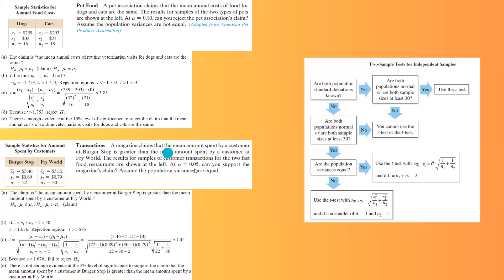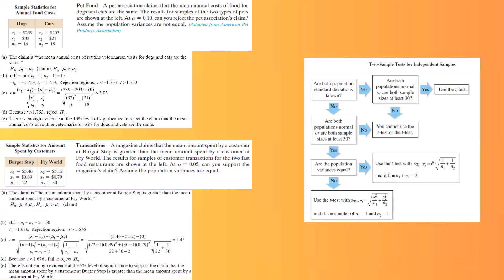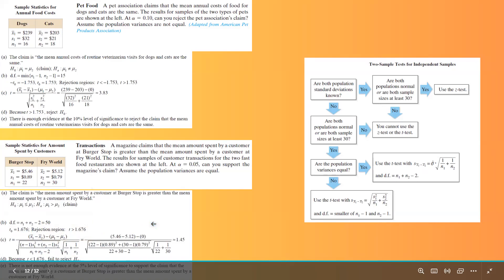At a 5% level of significance with 50 degrees of freedom, the critical value is 1.676. For the right-tail test, reject when t is greater than 1.676. The test statistic formula is x1-bar minus x2-bar minus (mu1 minus mu2), divided by the square root of [(n1 minus 1)s1 squared plus (n2 minus 1)s2 squared] divided by (n1 plus n2 minus 2), multiplied by the square root of 1 over n1 plus 1 over n2.